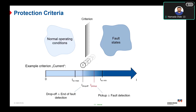The differential current is the main difference between the primary side current and the secondary side current, based on Kirchhoff's current law. This differential current can be used for differential protection inside a transformer, or for a line, busbar, motor, and so on. The differential current criteria can be applied if we have CTs on all sides of the protected object, allowing us to compare and calculate delta-I, the differential current.